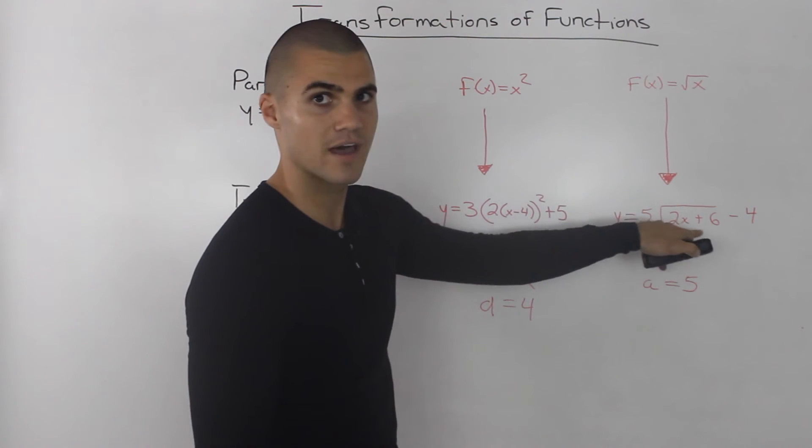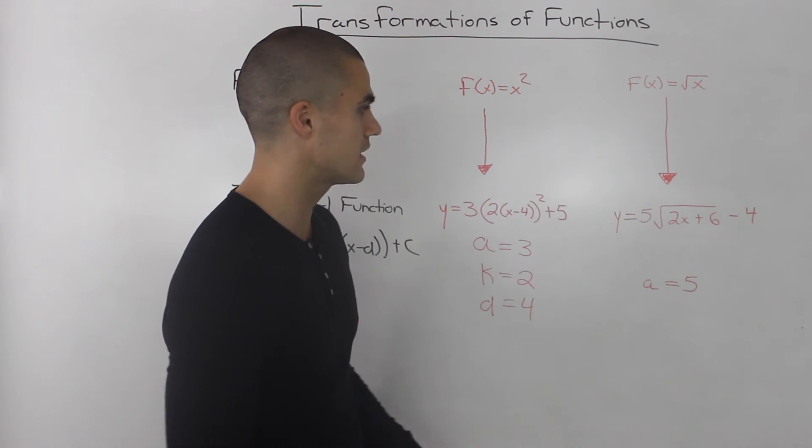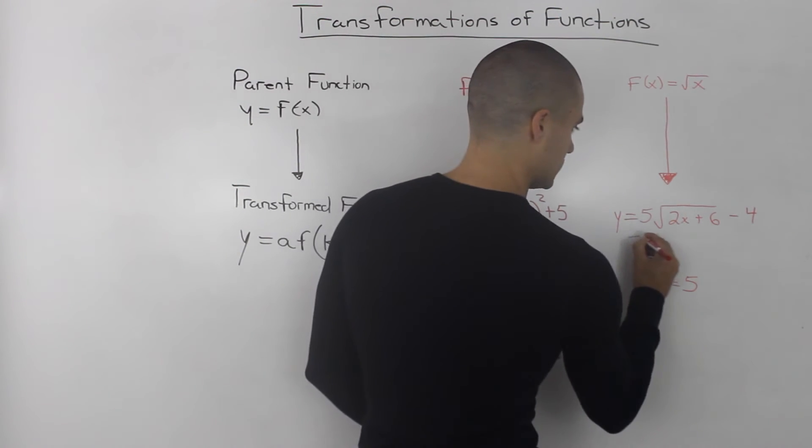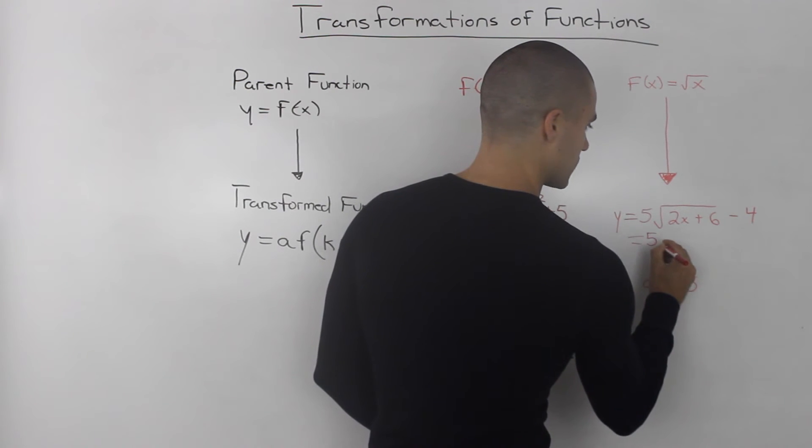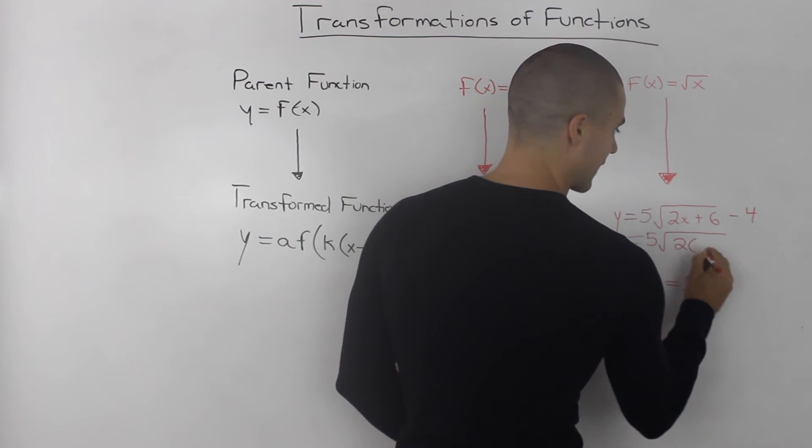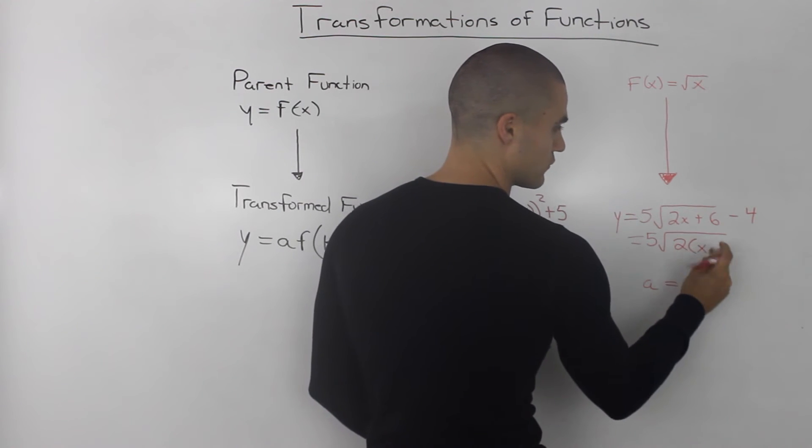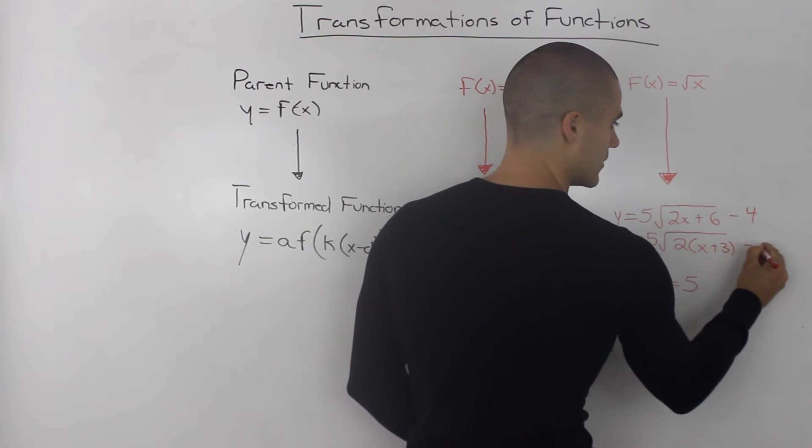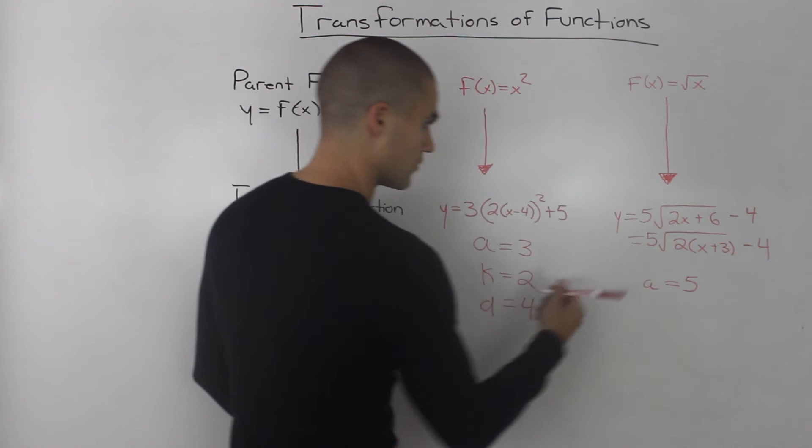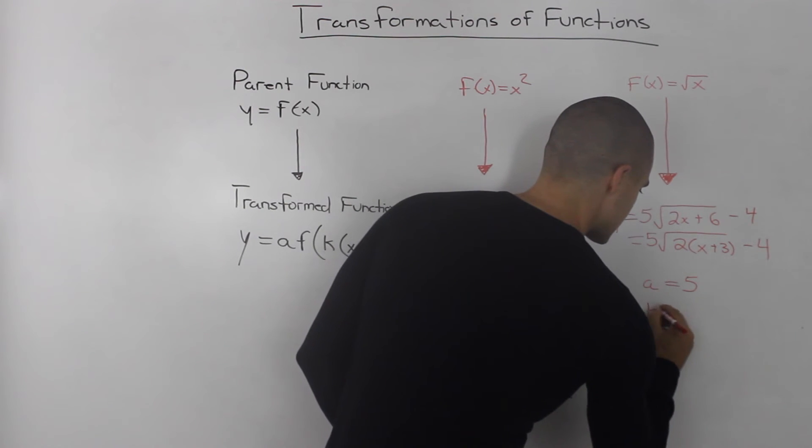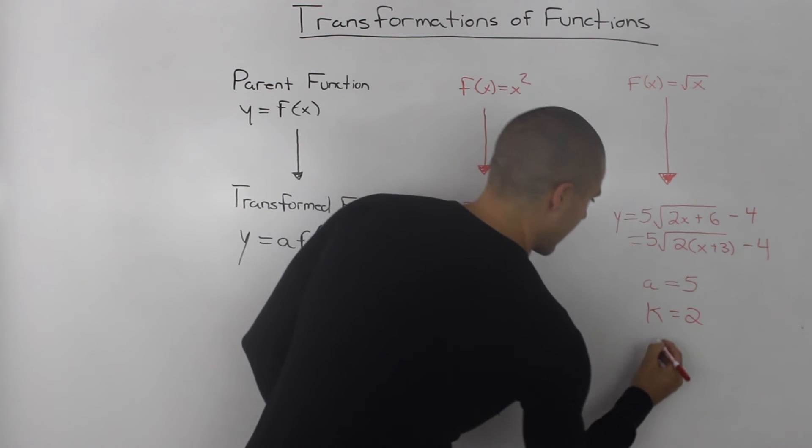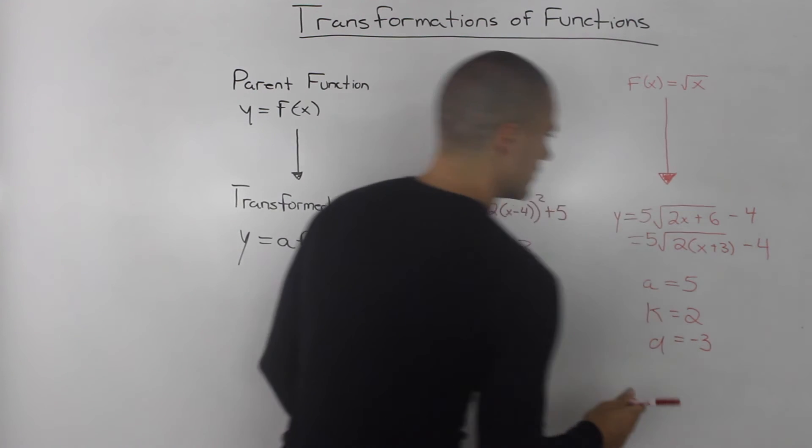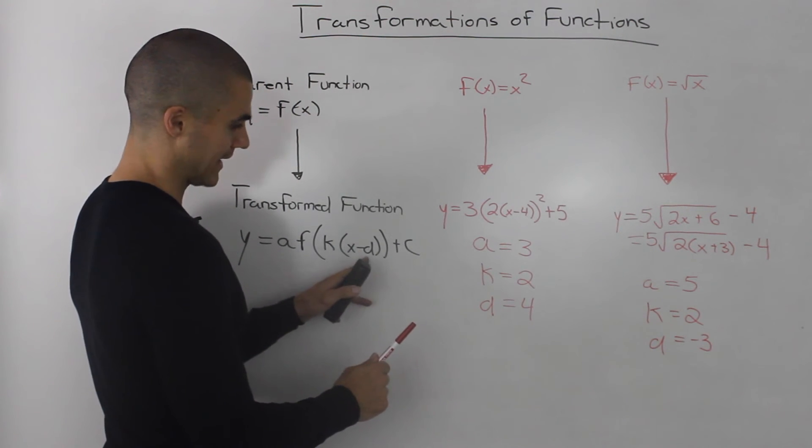We have to make sure that the x value is by itself. And we'll go over examples in future videos where we'll elaborate on that. But you've got to make sure you'll run into questions where you'll have to factor out the k value to get the x by itself. So if we factor out a 2 from this 2x+6, we're left with x+3 minus 4. So the k value in this case is 2 and the d value is negative 3 because it's in the form x-d.